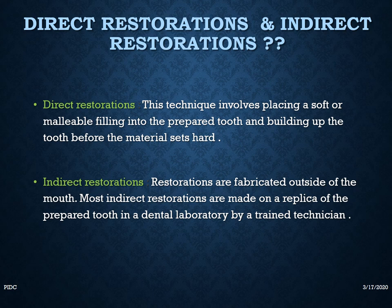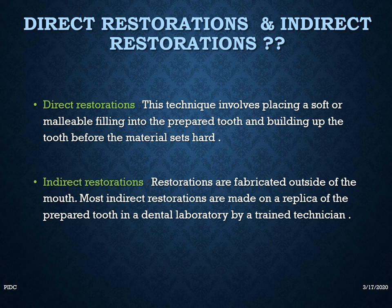Indirect restorations are defined as restorations that are fabricated outside of the mouth. Most indirect restorations are made on a replica of the prepared tooth in a dental laboratory by a trained technician. After preparing the cavity, instead of a direct restoration like composite, you take an impression of the cavity preparation and send it to the dental laboratory. The lab makes the restoration — a crown or anything — and sends it back, and then you lute it back.